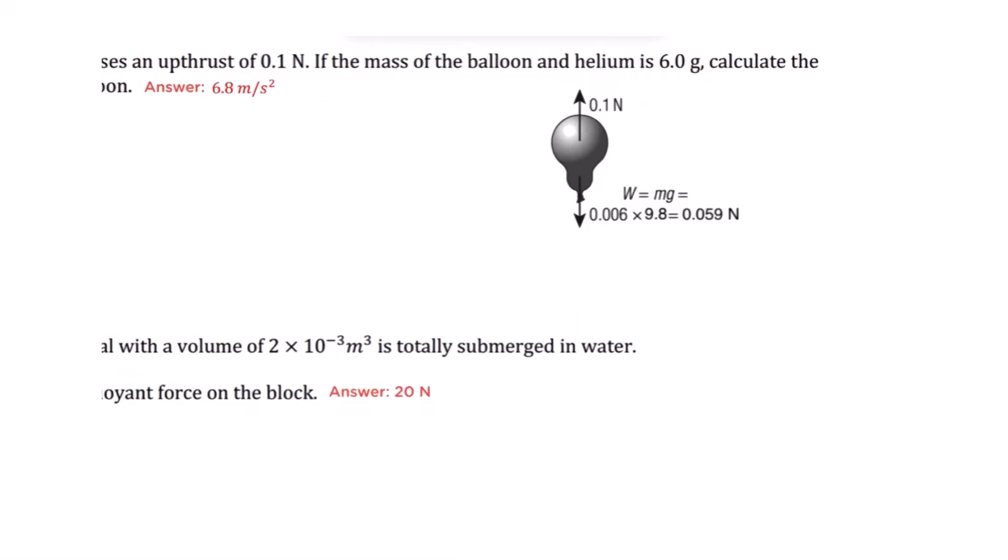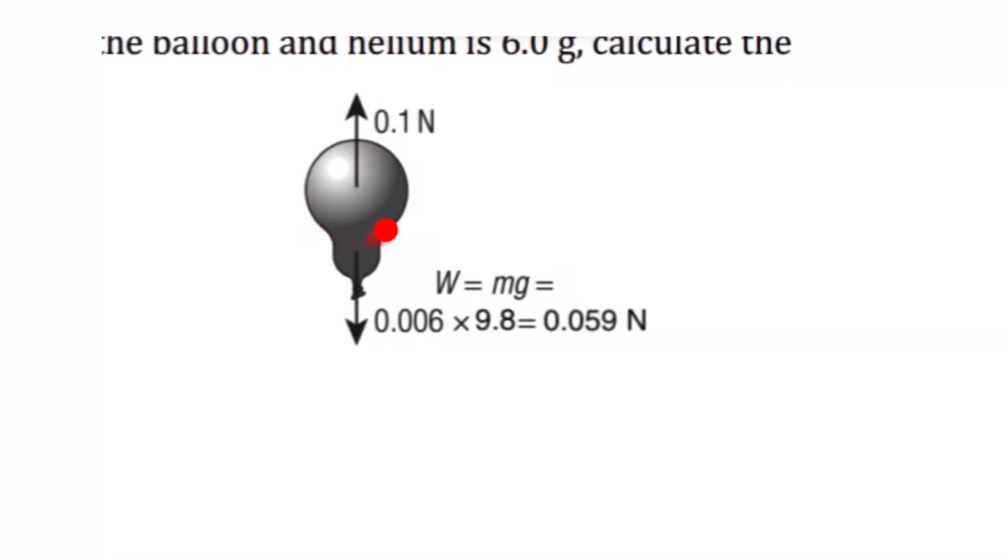So we have this illustration right here. This is the balloon, so there's an upthrust or an upward force due to the air molecules of 0.1 Newton. And the weight of the balloon would just be equal to the mass of the balloon multiplied by the acceleration due to gravity.